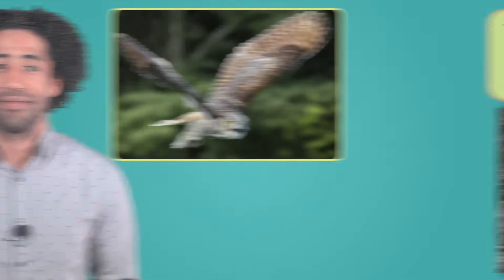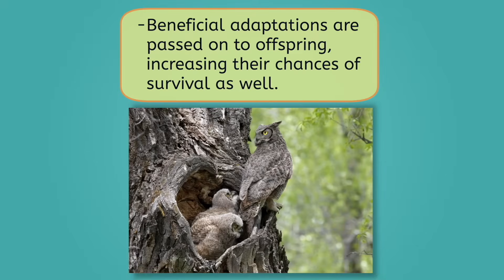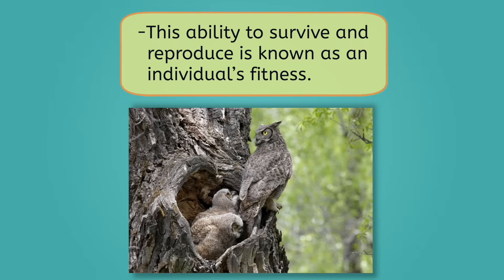Another example is the great horned owl, which has excellent night vision and specialized feathers designed for silent flight. These adaptations allow the owl to catch and eat more prey, increasing its chances of survival and, consequently, reproduction. Beneficial adaptations are then passed on to offspring, increasing their chances of survival as well.